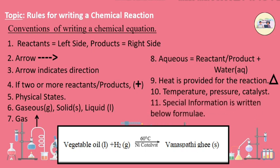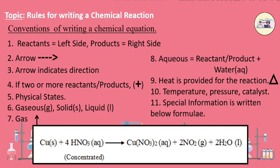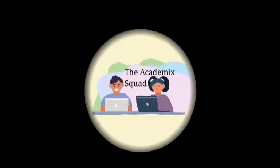Special information on names of reactants and products are written below their formulae. For example, here the reactant HNO3 is present in its concentrated state.